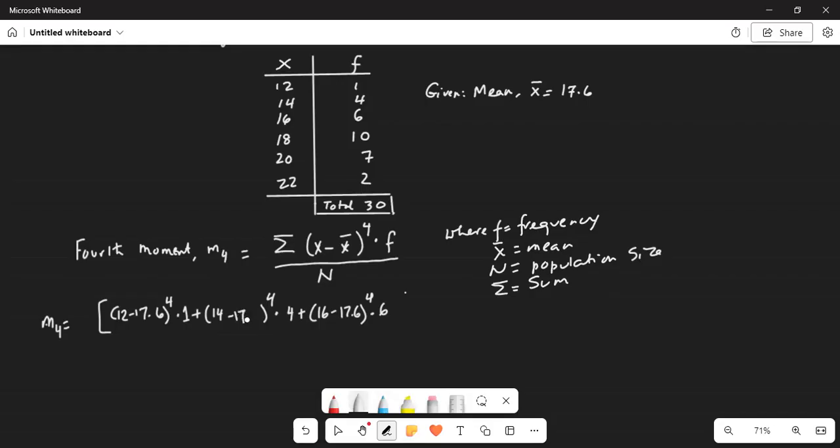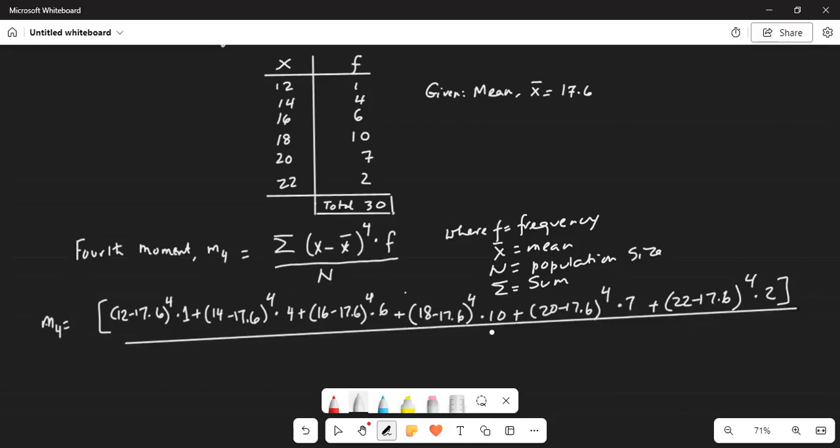Similarly the next one will be 18 minus 17.6 exponent 4 multiplied by its frequency plus 22 minus 17.6 exponent 4 multiplied by its frequency. The whole thing is divided by the population size which is 30.